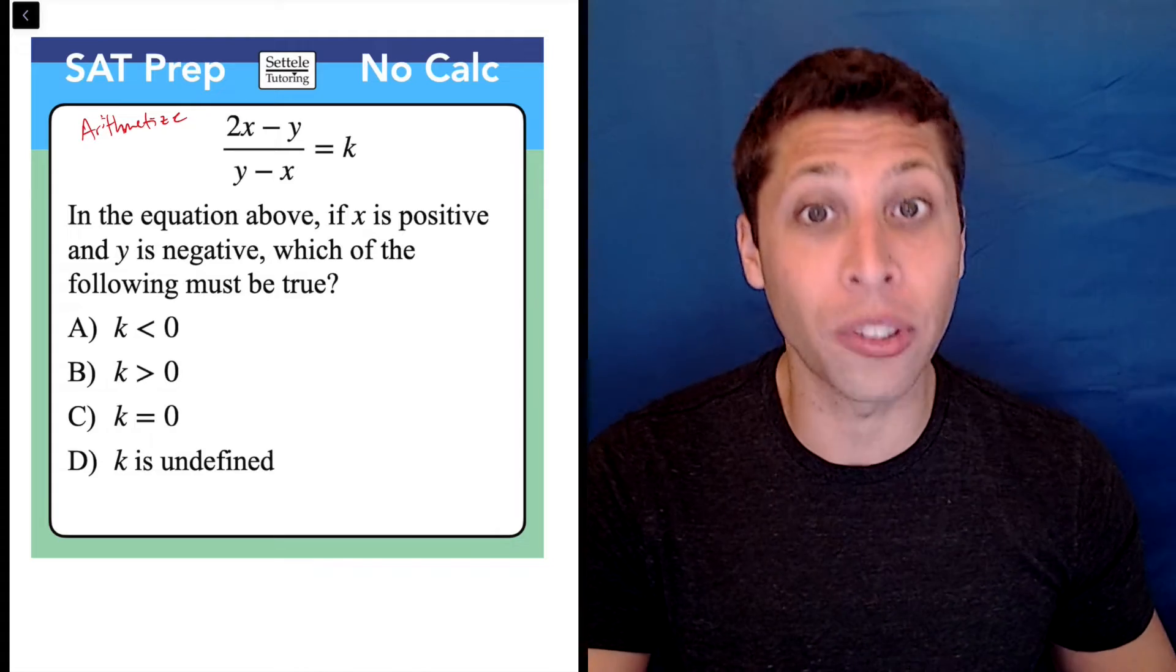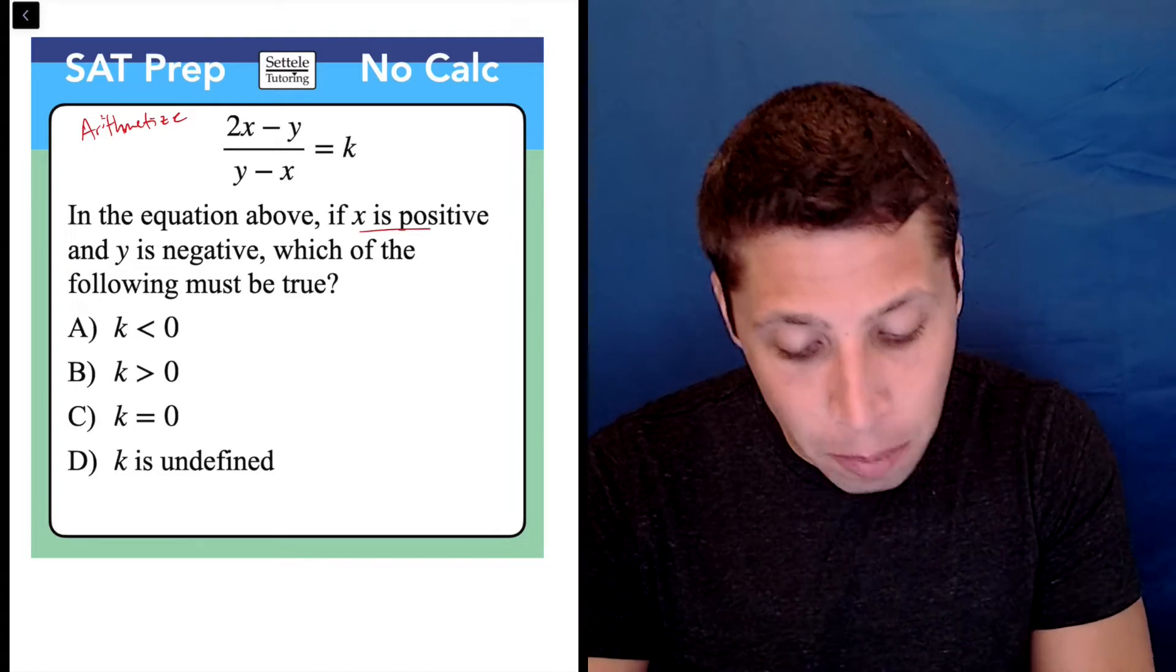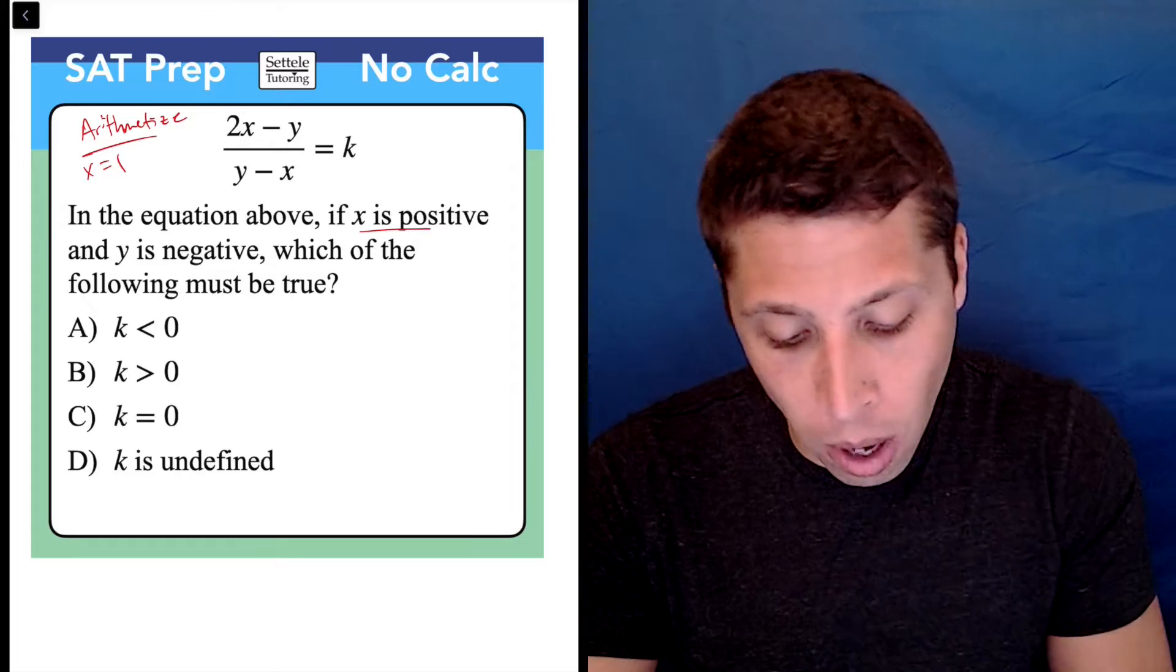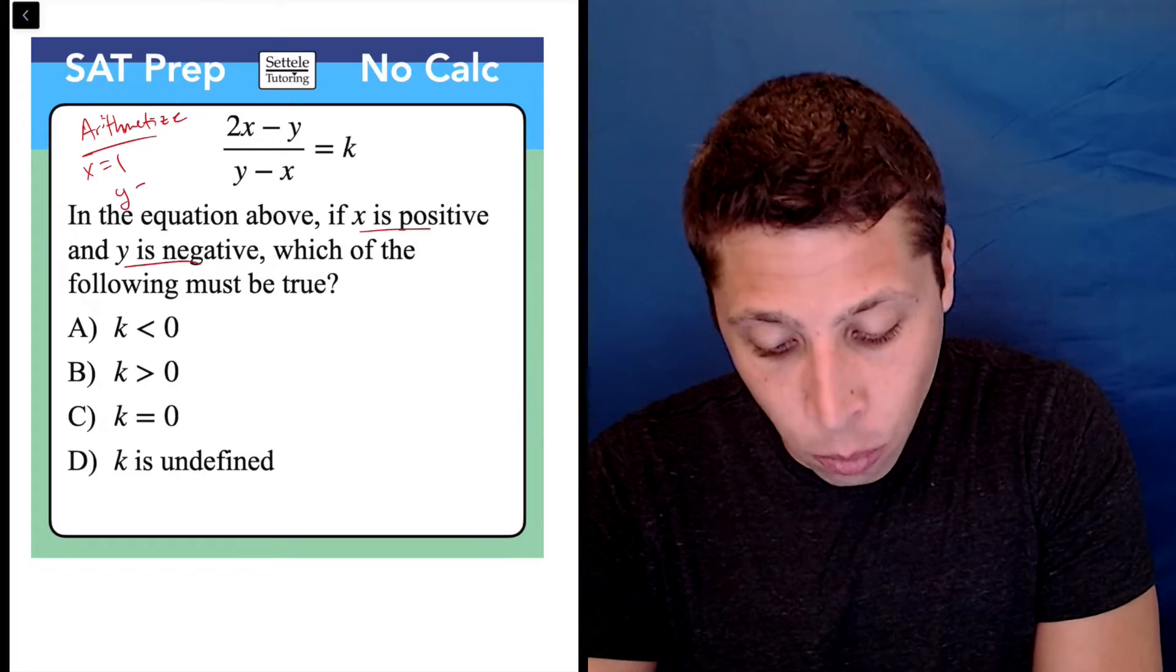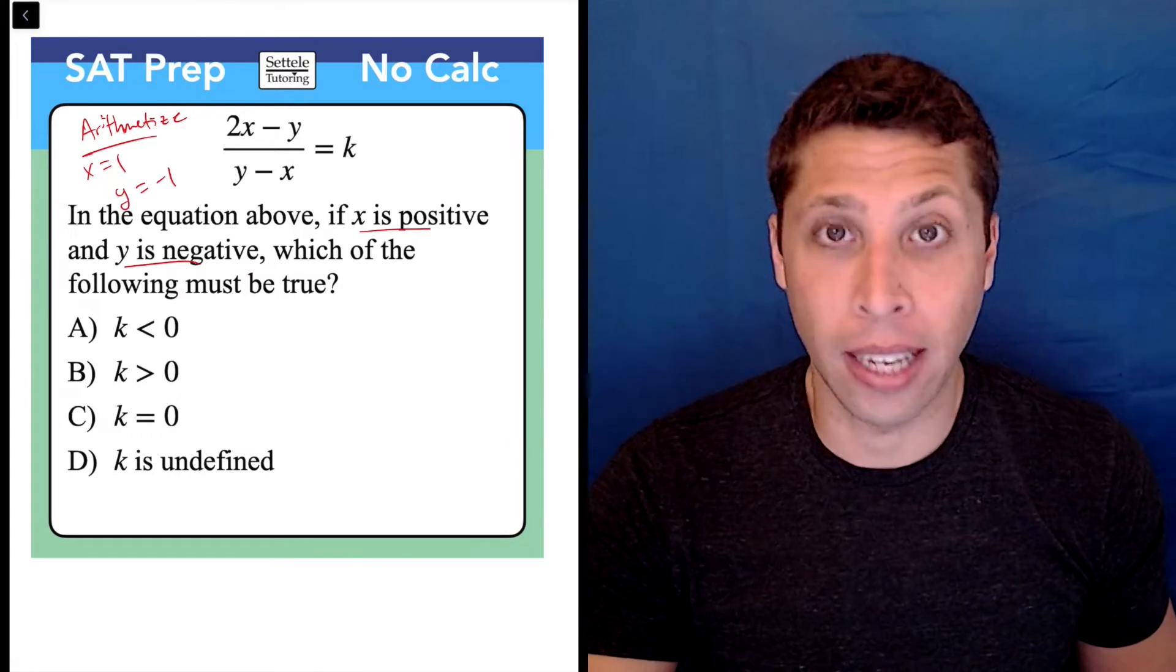Pick some numbers that follow the rules and see what happens. If x is positive, we can say that x is one. If y is negative, we can say that y is negative one, the simplest things I can think of.